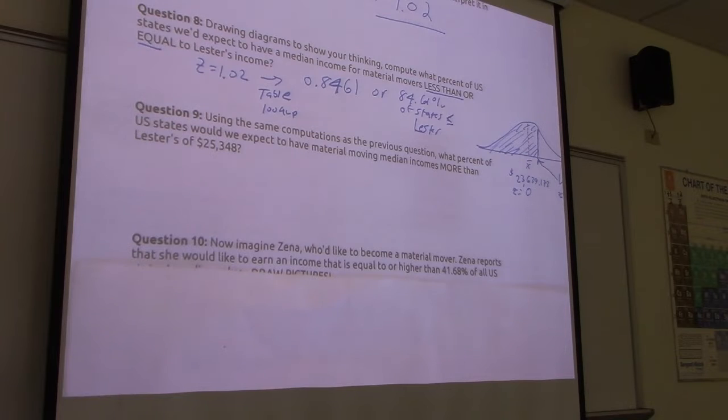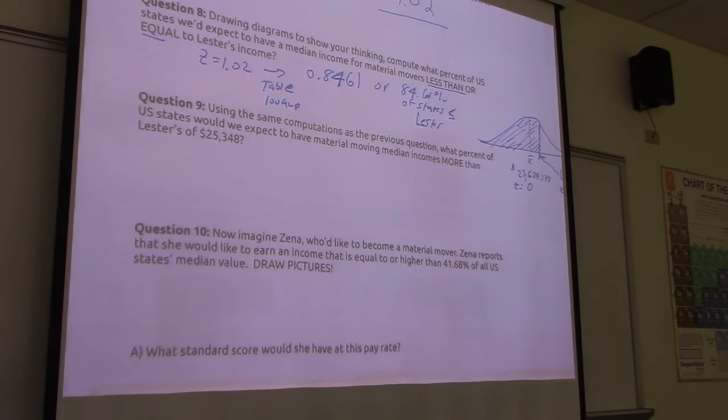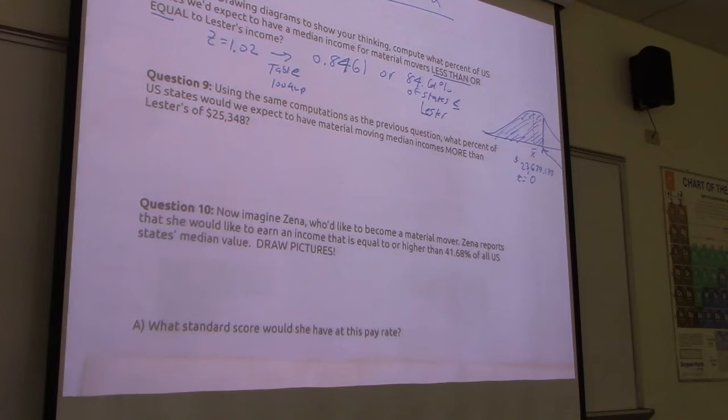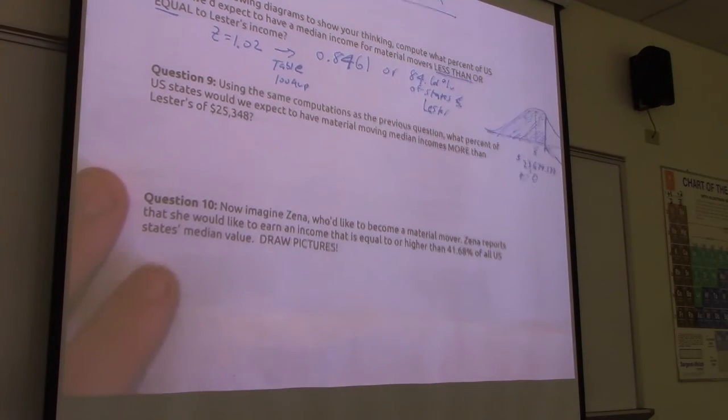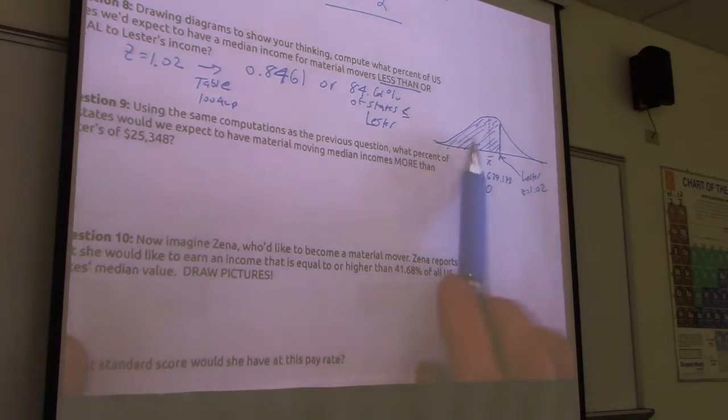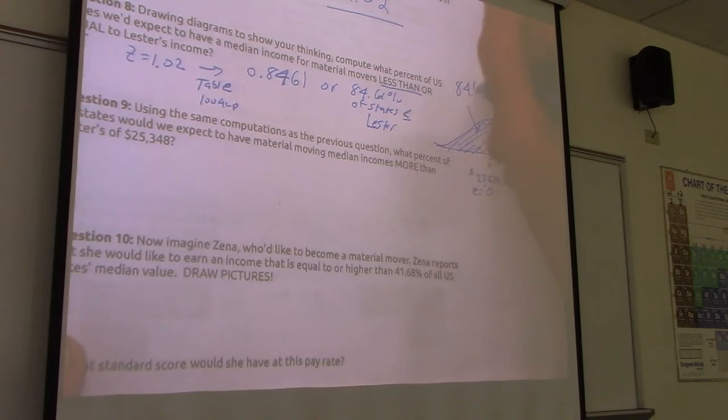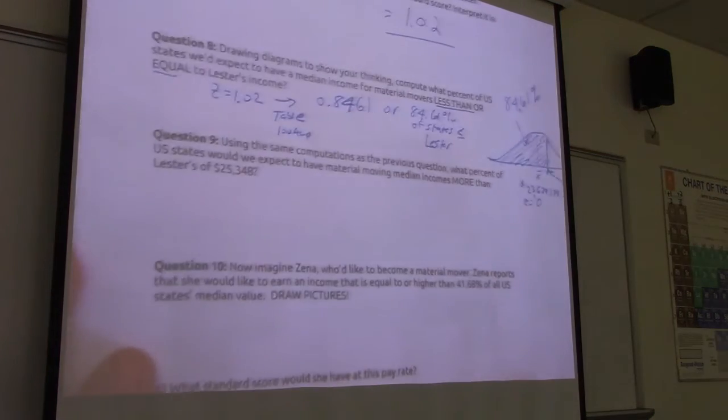So this is a powerful thing. Describe a lot of the world with this. Oh, wow. We're doing okay. Question 9 is our flipper. Anyone can read 9? Avery, maybe? Could you read 9? Yes. Thanks. Using the same computations as the previous question, what percent of the U.S. states would we expect to have material with a median income more than Lester's of $25,348? One little calculation required. Remember, this is where I'm just having you flip it. We learned that 84.61 are less. So how many are more? Draw your picture. Always draw a picture.